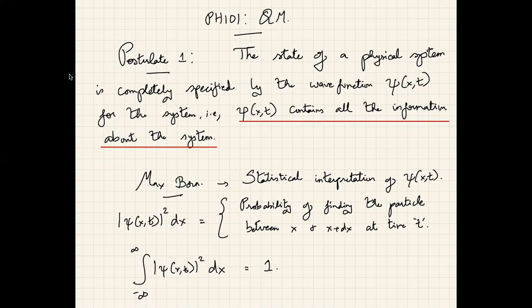Postulate one of quantum mechanics simply tells you that in order to measure anything or calculate any probability you ought to know the wave function of the system. The rest of the postulates elaborate on this by telling you how to calculate these probabilities. As we move along we will introduce the notion of operators and how they act on the physical system.